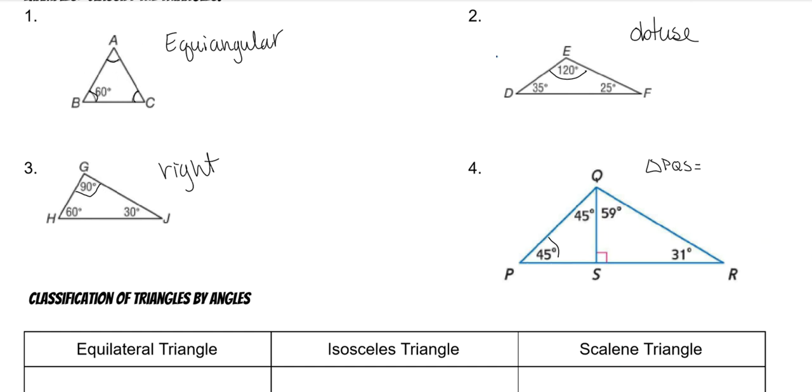So because there are two 45s and this one's a right, it's still a right triangle. And then on triangle QRS, it is still a right triangle.